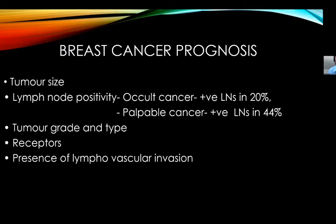Breast cancer prognosis also depends on tumor grade, type, receptor status, and lymphovascular invasion. As a radiologist, what can you actually control? All you can control is what size you are picking up the lesion at. If it is a small size, lymph nodes are going to be negative, so you want to pick it up when it is small. You cannot predict tumor grade, type, or receptor status — but you can control detection size.